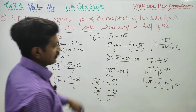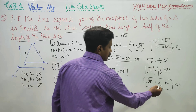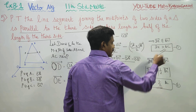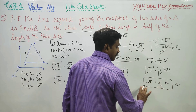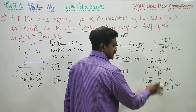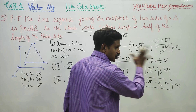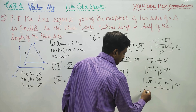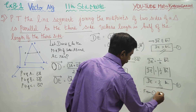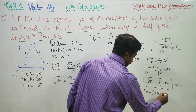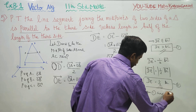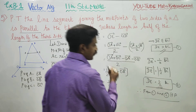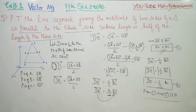From results 1 and 2, the proof is complete — the line segment joining the midpoints of two sides of a triangle is parallel to the third side and its length is half the length of the third side. Thank you.